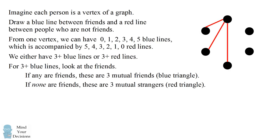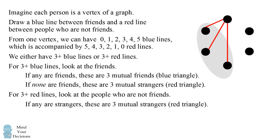Now let's consider the other case, where we have at least three or more red lines. Now we'll look at the connected vertices—in other words, we'll look at the people who are not friends with this person. Now if none of these people are friends with each other, if any of these people are strangers, we're going to form a red triangle. We'll have three mutual strangers.